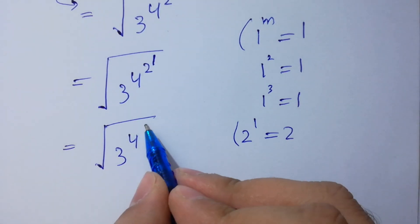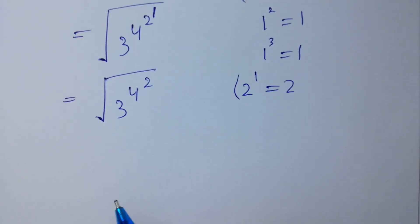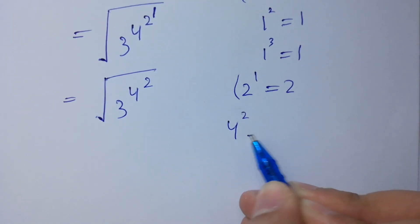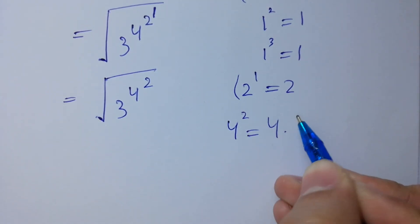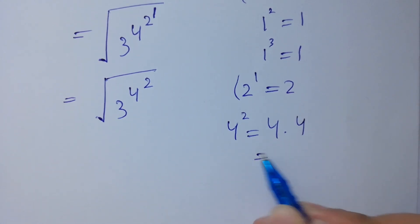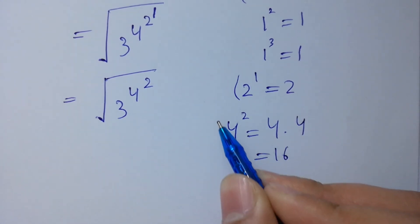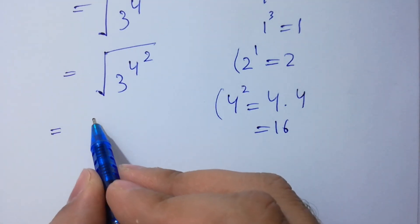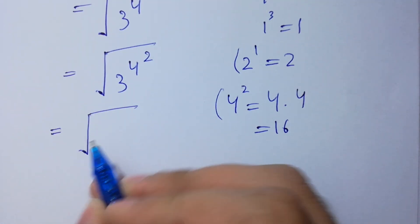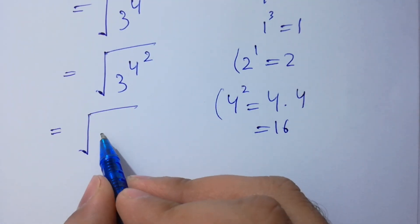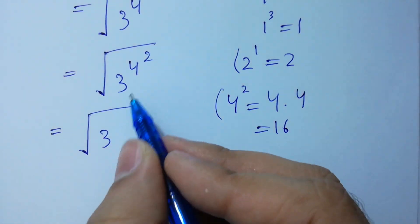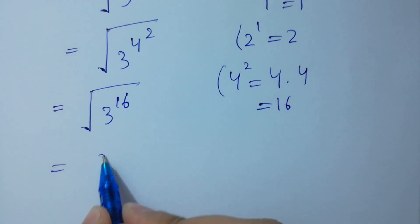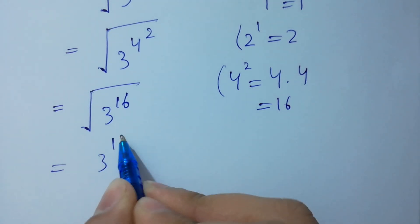Next, 2 to the power 1 is 2. Then 4 squared equals 4 times 4, which equals 16. So it can be written as the scale root of 3 to the power 16.